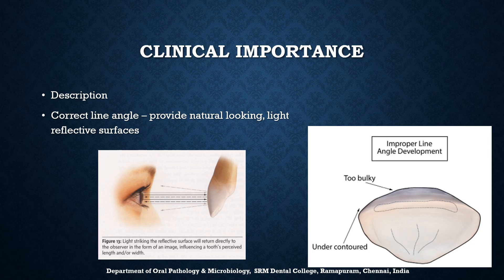As mentioned before, line angles and point angles are only for descriptive purposes. However, it is essential that when we restore teeth, these line angles and point angles should be restored correctly, because only if the line angles are correct will they provide natural-looking light-reflective surfaces. For example, if the labial surface is too bulky and the line angles are under-contour, this will affect the aesthetics of the restoration.